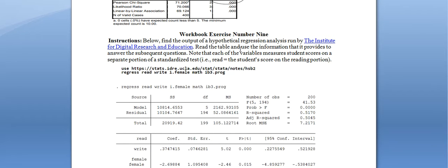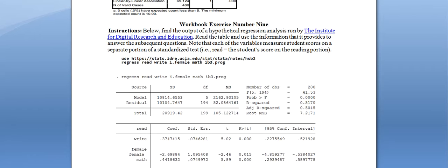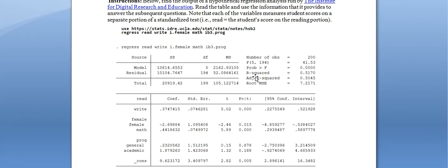You're asked to use this hypothetical analysis output to answer some simple questions. Note that each variable measures a student's score on a particular portion of the exam, except for female and general progression. General progression refers to the student's overall level of academic attainment, as described in the source linked in this chapter — checking that source may help you work through the material.